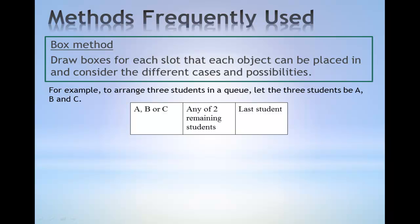For example, arrange three students in a queue, let the three students be A, B and C. By considering the three boxes, we see that the first box can be either A, B or C. Once we have fixed the first student, the second box can be only one of the remaining two students and the last box must be occupied by the remaining student that has not been chosen before.